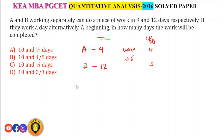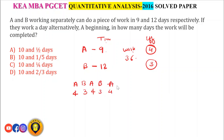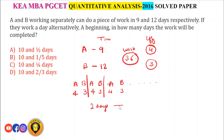Working alternatively: A works day 1 doing 4 units, B works day 2 doing 3 units. In every 2 days, 7 units of work are completed. This pattern repeats. We need to complete 36 units total. Finding the nearest multiple of 7 below 36: 7 × 5 = 35. So in 10 days, 35 units are completed.